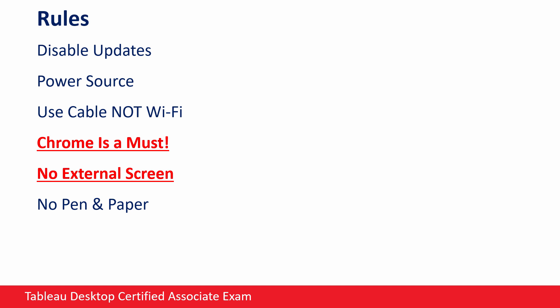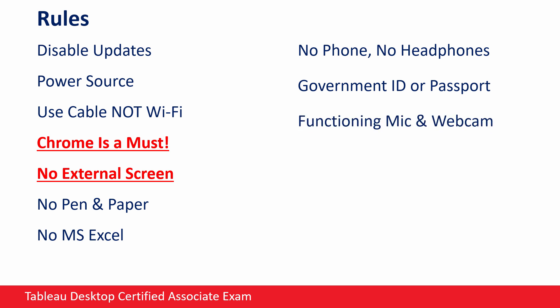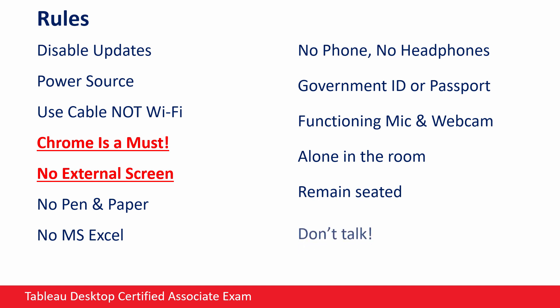In the exam, you are not allowed to use a pen and paper, Microsoft Excel, or have your phone or headphones. You have to have a government-issued photo ID or passport to prove your identity. Your microphone and camera must be fully functional because they capture your audio and video. You will rotate your webcam 360 degrees before you begin the exam and show your room — so your table must be clean. You should have only your computer, your mouse, and your ID. You can also have some drinks such as coffee, tea, or water. During the examination, you have to be alone in the room and remain seated — you can't go to the bathroom or leave your seat. You are not allowed to talk, even with yourself; if you talk, they will immediately warn you.